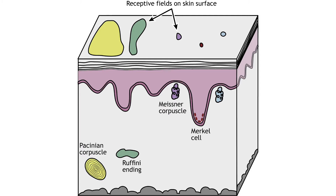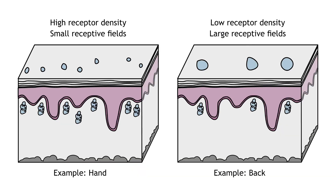Merkel cells and Meissner corpuscles, both of which are located near the skin surface, have small receptive fields. Ruffini endings and Pacinian corpuscles, located deeper in the skin layers, have larger receptive fields than the Merkel cells and Meissner corpuscles. Receptive field sizes are different among the different mechanoreceptors, but they also vary among different body regions.